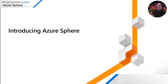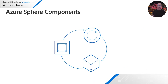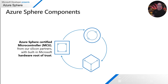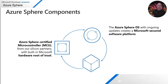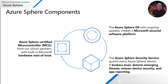Azure Sphere is made up of three components that together implement those seven properties for highly secure devices. The first component is Azure Sphere certified microcontrollers from silicon partners — connected crossover microcontrollers capable of running a high-level operating system and real-time applications. The second is the Azure Sphere operating system, with ongoing updates to keep the platform secure. The third is the Azure Sphere Security Service, responsible for brokering trust, detecting emerging threats, renewing device security, and app reporting.